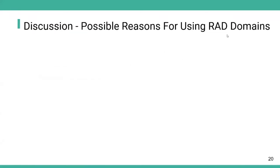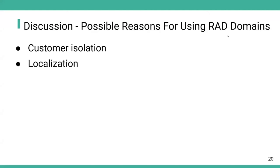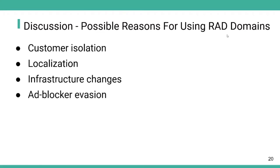We discuss some possible reasons behind the use of red domains. We manually inspected all of them and concluded four major reasons. The first is customer isolation — several advertisers use unique domains for different customers. The second is localization — some advertisers replace their country's top-level domains to serve localized ad content. The third is infrastructure changes — ad domains moved from their own domain to a different CDN provider. The fourth is intentionally evading ad blockers, such as moving to first-party subdomains.